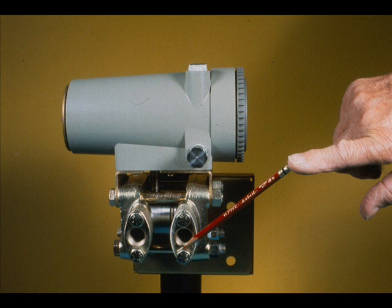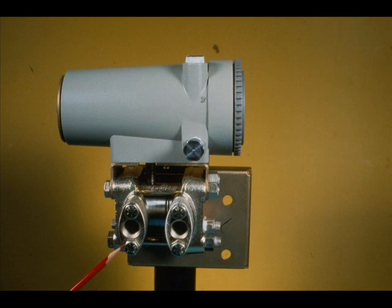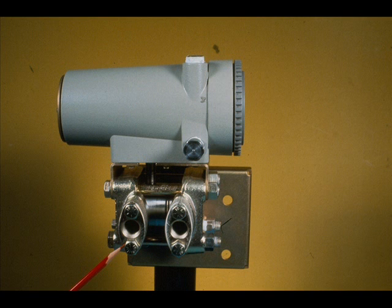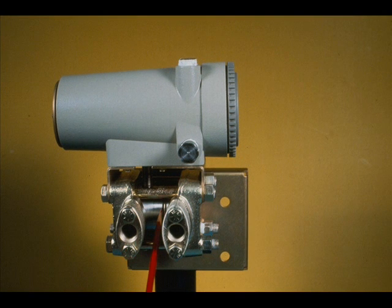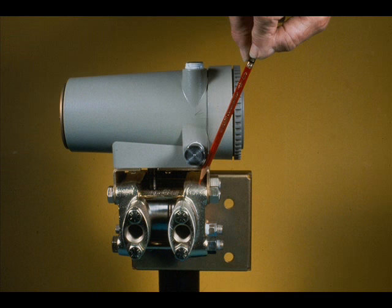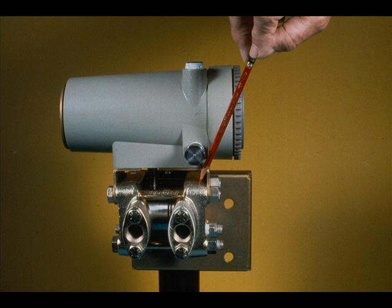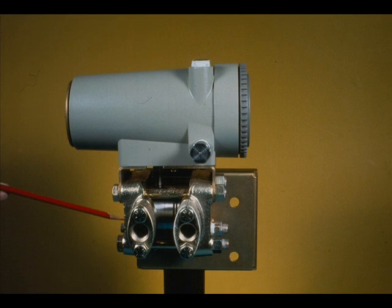The following parts make up the measuring head: the high-pressure process connection, the low-pressure process connection, the body assembly, the high-pressure flange, and the low-pressure flange.